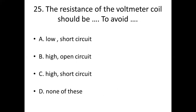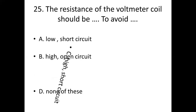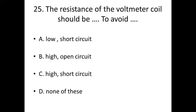25th bit: The resistance of the voltmeter coil should be dash to avoid dash. Option A: Low, Short Circuit. Option B: High, Open Circuit. Option C: High, Short Circuit. Option D: None of this. Answer — Option C: High, Short Circuit.